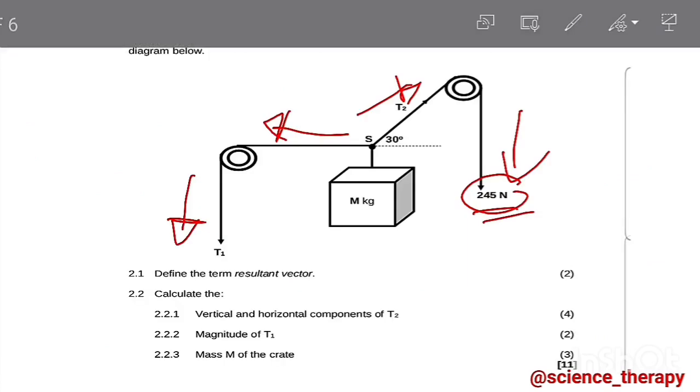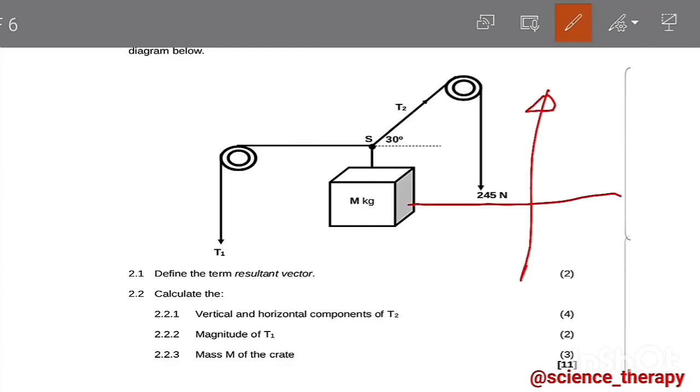Let's move to the next question. It says calculate the magnitude of T1, 2.2.2. For that one we're going to resolve this, draw our vector diagram here to show the forces acting in here. Remember upward there we have resolved this one T2, it's in the first quadrant, so this is our Ty and then going all the way there that's our Tx for T2.